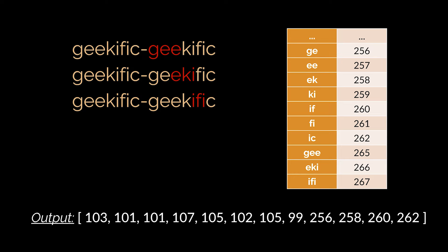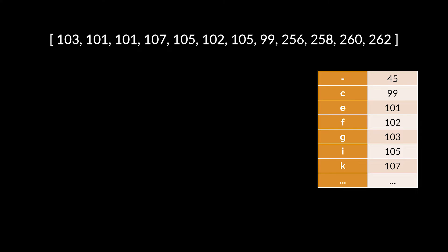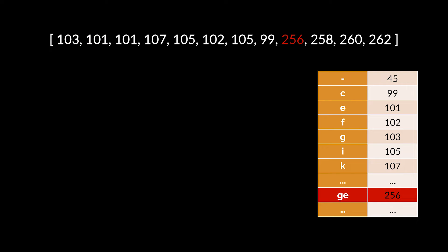The same is done for the remaining letters of the second 'geekific' word until all of our text is now compressed. Now let's try to decompress this same output using the LZW algorithm. We start with the same dictionary and use a similar but reversed logic. For each code number we check if it is present in the dictionary. If it is, we hold onto it, check the one following it, and append their corresponding characters along with a new code to the dictionary. By the time we reach code 256, a new entry for 'GE' having a code of 256 will have been created.